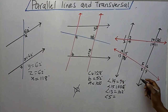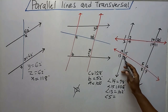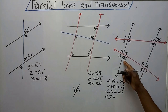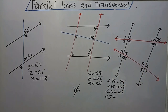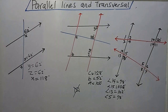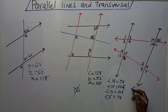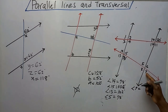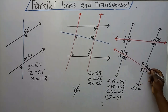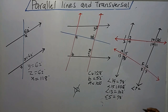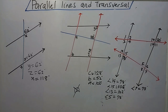I want to get angle 5. These lines are parallel and this is a transversal. On opposite sides of the transversal I have alternate interior angles, so angle 5 is equal to 78 degrees. The reason is alternate interior angles. Now for angle 7: these are intersecting lines, so the relationship between these angles is vertically opposite, so angle 7 is equal to 78 degrees.